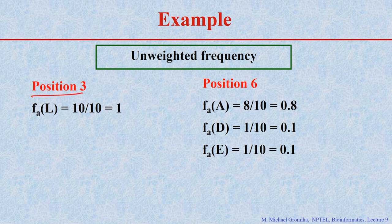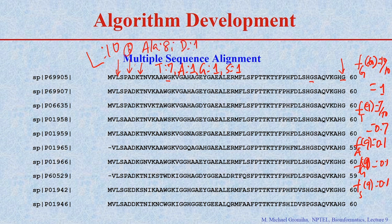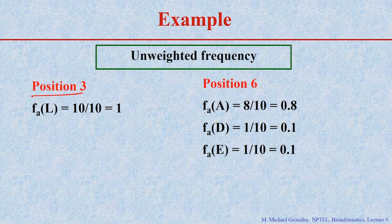Here is an example with two different positions. If you take position number 3, it is occupied by leucine 10 times out of 10. If you take position number 6: alanine occurs 8 times, D (aspartate) one time, E (glutamate) one time. So f(A) equals 0.8, f(D) equals 0.1, and f(E) equals 0.1.